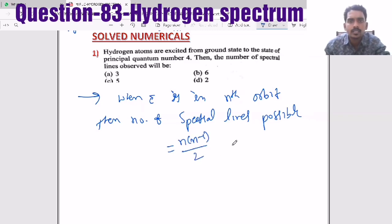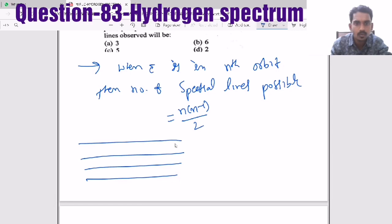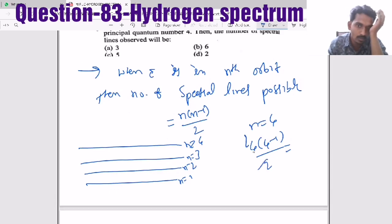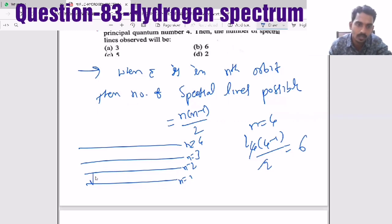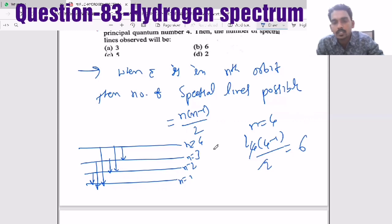When the electron is in the nth orbit, the number of spectral lines possible equals n(n−1)/2. For n=4: 4×3/2 = 6 spectral lines. You can verify this by counting: Lyman series gives 3 lines (transitions to n=1), Balmer gives 2 lines, and Paschen gives 1 line, totaling 6 spectral lines.